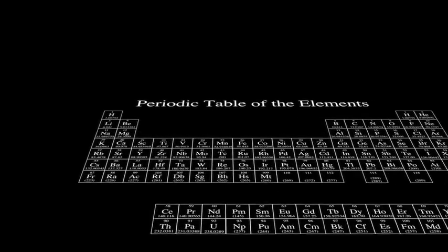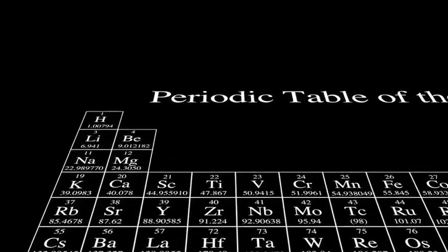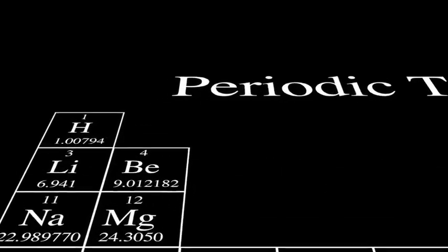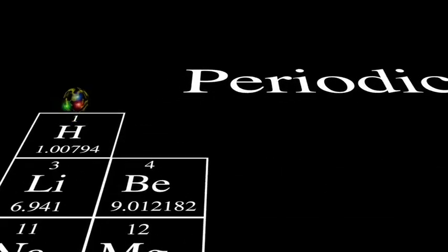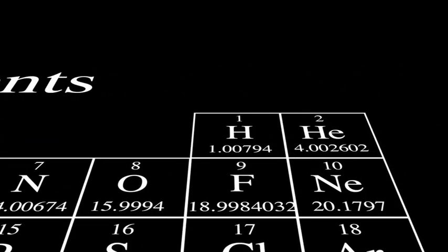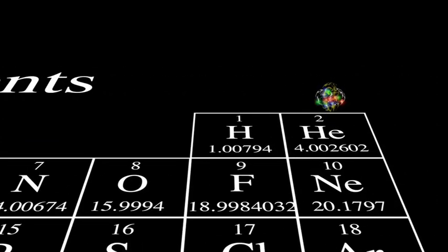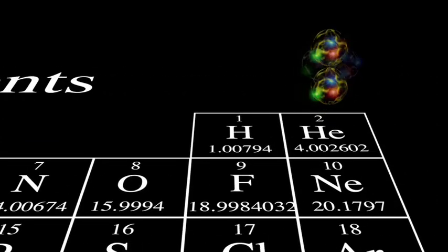These protons and neutrons can then combine to form the nucleus of each element in the periodic table. One proton in the nucleus makes hydrogen. Two form helium.